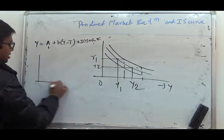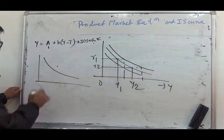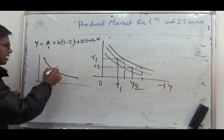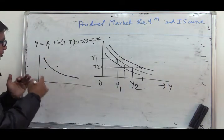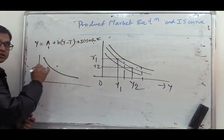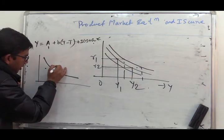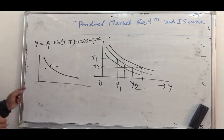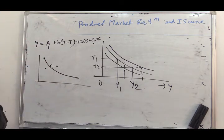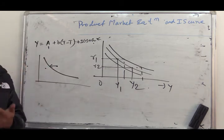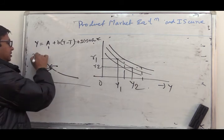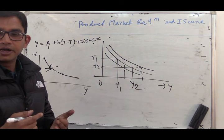Any point on the IS curve indicates the combination of rate of interest and Y that maintains commodity market equilibrium. Any point to the right or left of the IS curve means disequilibrium in the commodity market. If we consider any point on the right side, aggregate demand is less than aggregate supply — excess supply in the commodity market — so producers will increase inventory stock and next time reduce output, causing Y to decline. If a point is on the left side, there is excess demand, producers deplete their inventory stock and increase production next time.